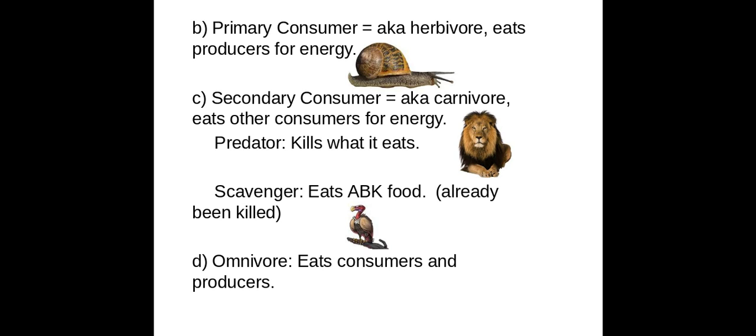Primary consumers eat producers, and secondary consumers eat primary consumers. There are two types of secondary consumers: scavengers, which eat food that's already been killed — for most people, going to the grocery store is a form of scavenging — and predators, which kill what they eat. Most predators are also scavengers. An omnivore acts as both a primary and secondary consumer because it eats both producers and other animals.